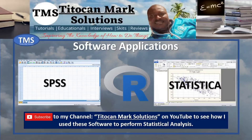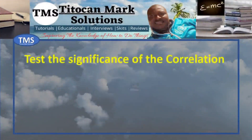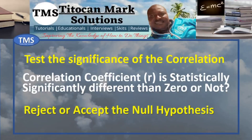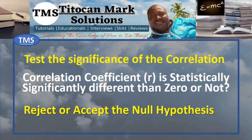When you calculate Pearson's Correlation Coefficient by hand, you will need to test the significance of the correlation to help decide whether the calculated Pearson's Correlation Coefficient is statistically significantly different from 0 or not, so as to reject or accept the null hypothesis. But when you use software to perform this correlation analysis, the software will automatically perform the test of significance using appropriate test statistics to give you the results. Some software even gives you the interpretation which you are required to do yourself when calculating by hand.